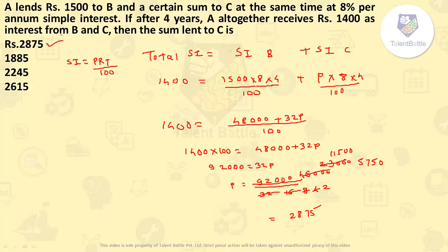The calculation can be done by other methods as well, but what's important is to understand the method used. So the sum lent to C is Rs 2,875.